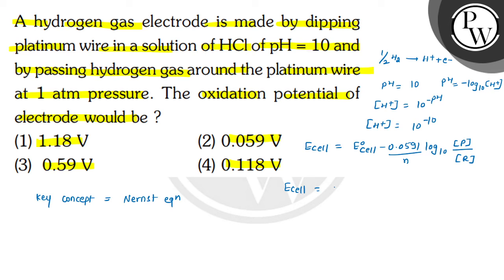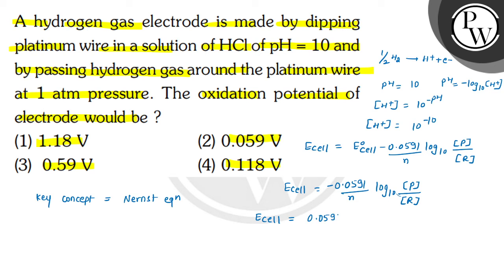We can write: E_cell = minus (0.0591 / n) × log₁₀(concentration of product / concentration of reactant). We can change the negative to positive by converting the reaction. So it becomes 0.0591 divided by n. Here 1 electron is used, so n = 1.